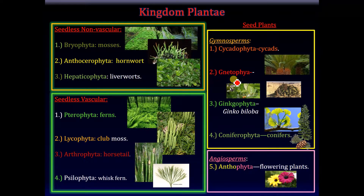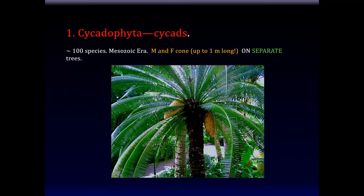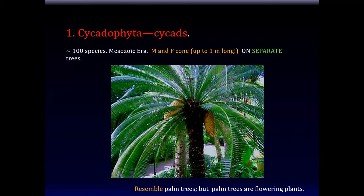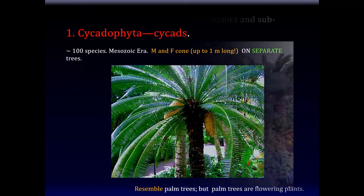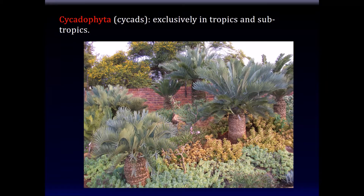Now let's talk about these plants one at a time, starting with the cycads, or Cycadophyta. There are apparently about 100 species of these left. In these plants, the male and female cones — which can be up to one meter long — are on separate trees, so there's a tree with the male cone and a tree with the female cone. Although they resemble palm trees, they're not palm trees — palm trees are actually flowering plants, the last category we shall study. They're quite beautiful and apparently exclusive to tropical and subtropical areas.